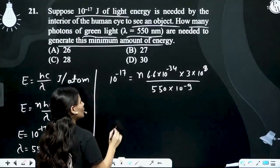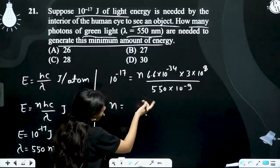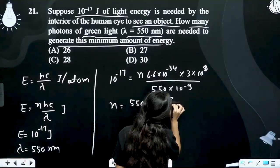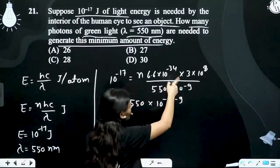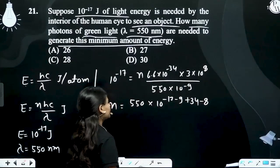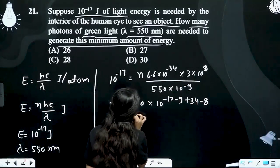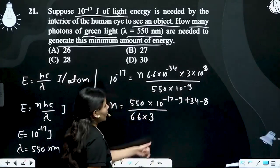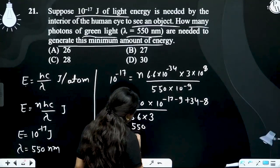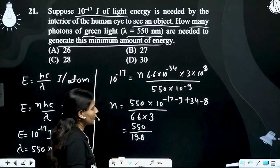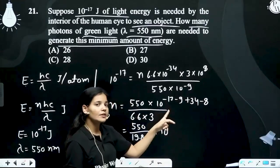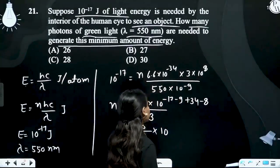Toh jo N ki value hai, wo kitni ho jayegi? N equals 550 into 10 to the power (minus 17 minus 9). Divide mein minus 34 upar jayega, toh plus 34, aur plus 8 hai toh minus 8. Divided by 6.6 into 3. So exponent: minus 17 plus 9 is 26, plus 8 is 34, minus 34 — yani 10 to the power 0.